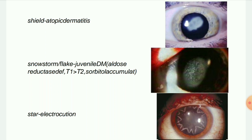Next image: Snowstorm/flake cataract in juvenile diabetes mellitus. This involves aldose reductase deficiency, with T1 more than T2 diabetes, and sorbitol accumulation. This is also known as diabetic cataract. Diabetes is associated with two types of cataracts: senile cataract — which appears at an early age and progresses rapidly — and true diabetic cataract, which is the snowflake or snowstorm cataract.